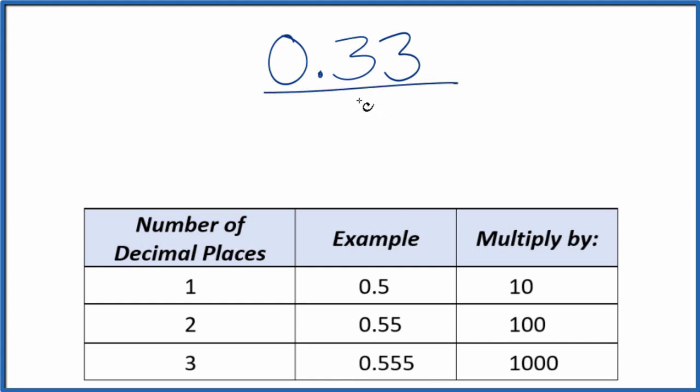First off, let's call this 0.33 over 1. It's still 0.33, we're just dividing by 1 here. But now we have the start of a fraction.